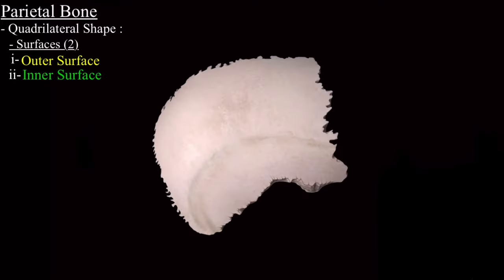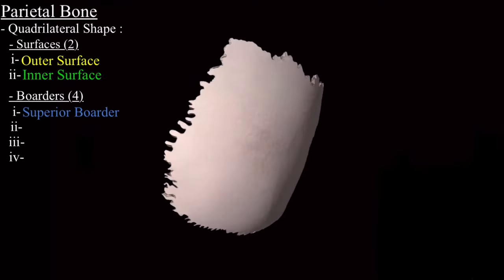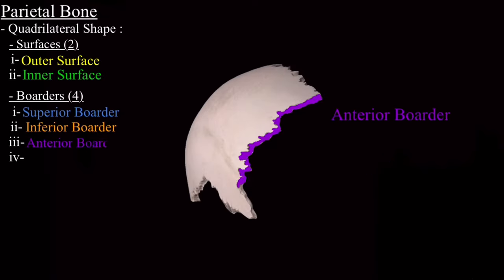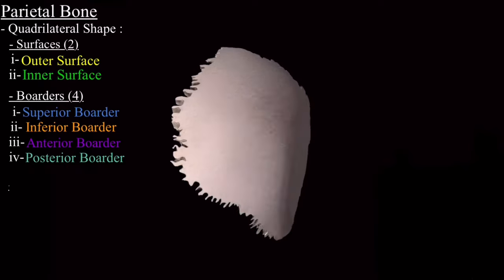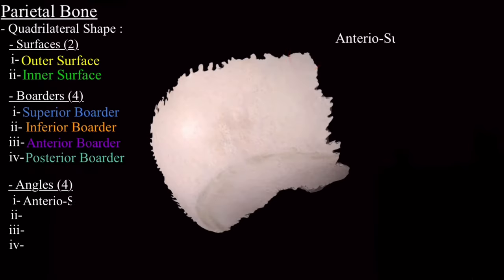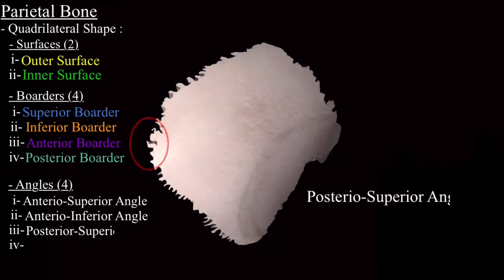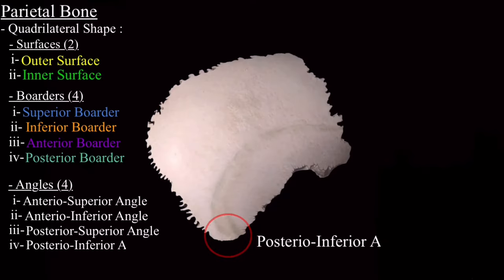It has four borders: the superior border, the inferior border, the anterior border, and the posterior border. It also has four angles: the anterior superior angle, the anterior inferior angle, the posterior superior angle, and the posterior inferior angle.